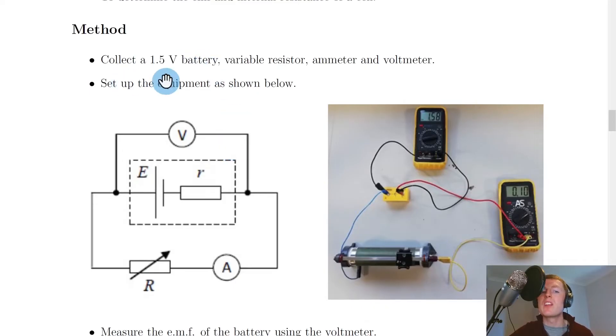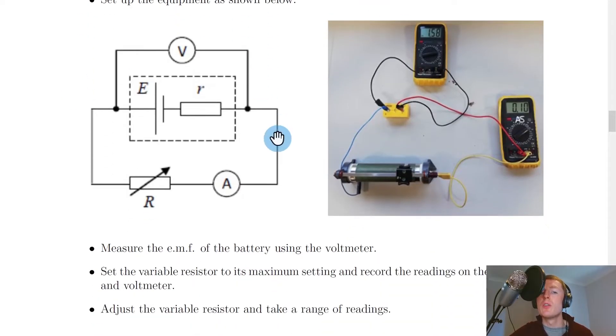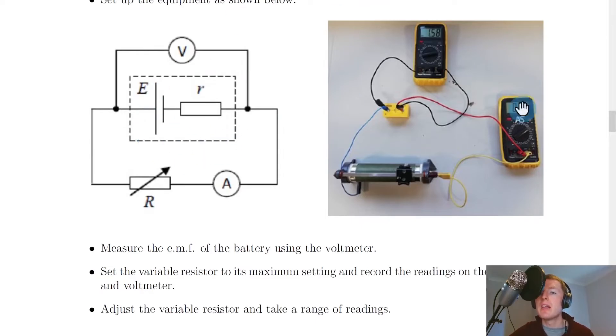The method would be to collect a 1.5 volt battery or cell, a variable resistor which is this device down here, an ammeter and a voltmeter. You then want to set up the equipment as shown below. So here's a circuit diagram and here's a real life picture of what that would look like.